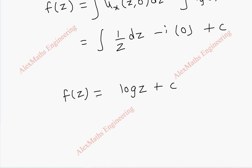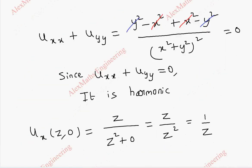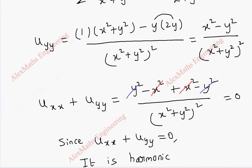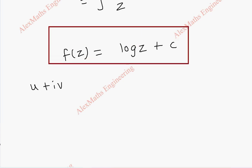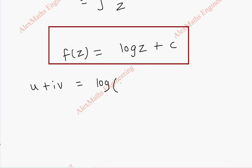Thus we got f of z equals log z plus c. Now we have to find its harmonic conjugate, that is v, the imaginary part. Since f of z equals u plus iv, we now separate the real and imaginary parts. This becomes log of x plus iy. However, it is not possible to separate real and imaginary parts this way, so we write z in polar form, that is r into e power i theta, since z equals r into e power i theta.